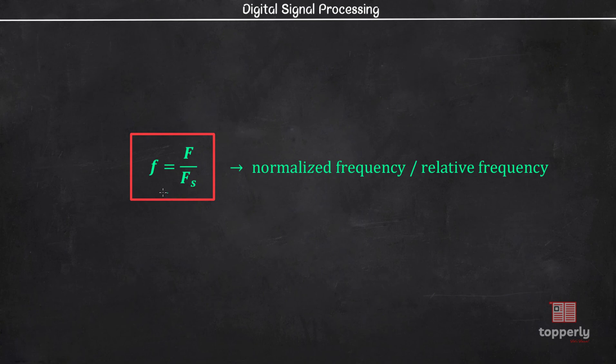Now let us find out the unit of normalized frequency. We know that the unit of capital F is cycles per second. Also, we know that the unit of sampling frequency Fs is samples per second.